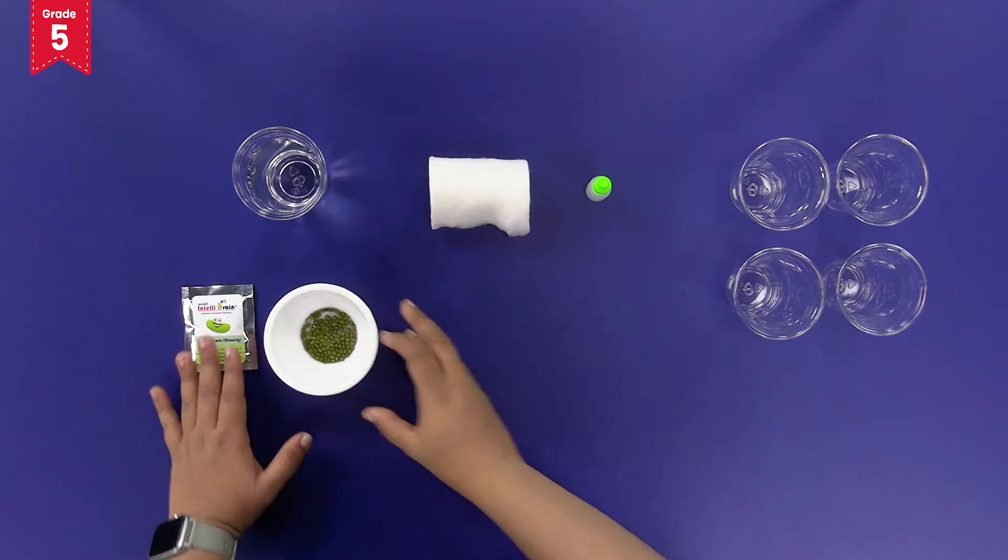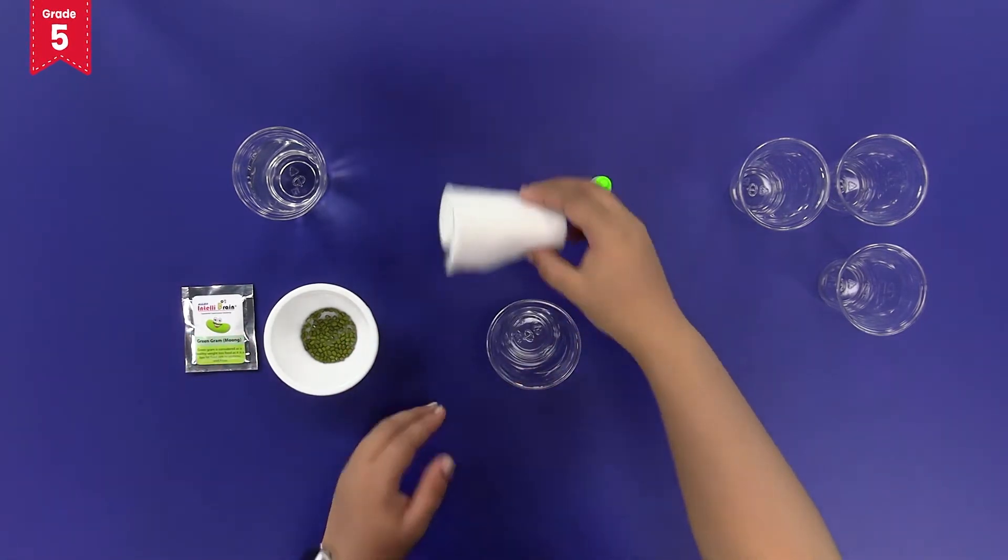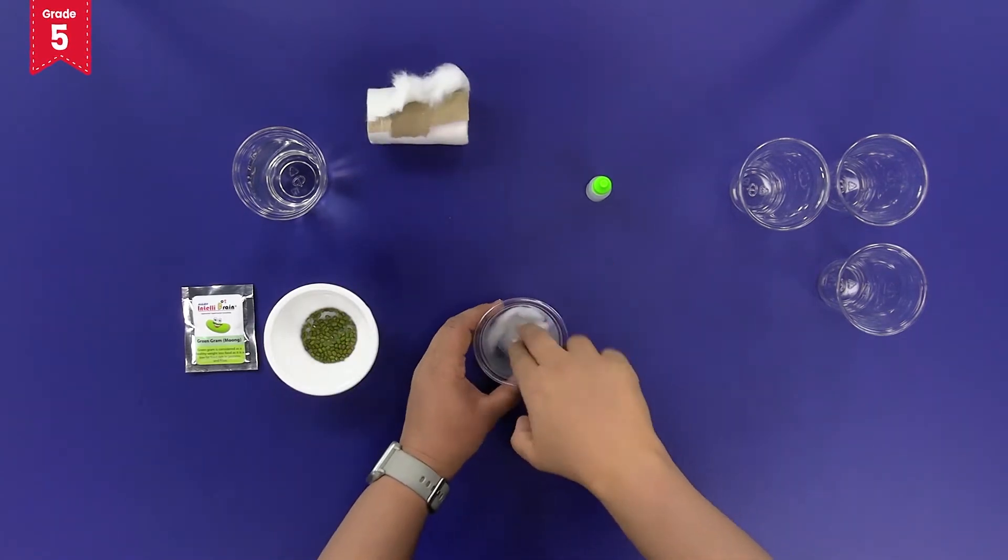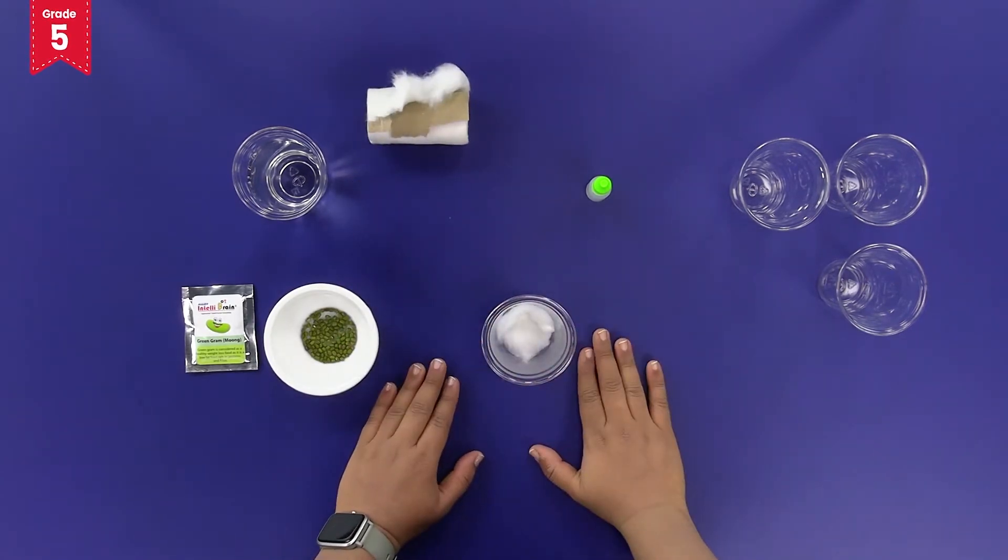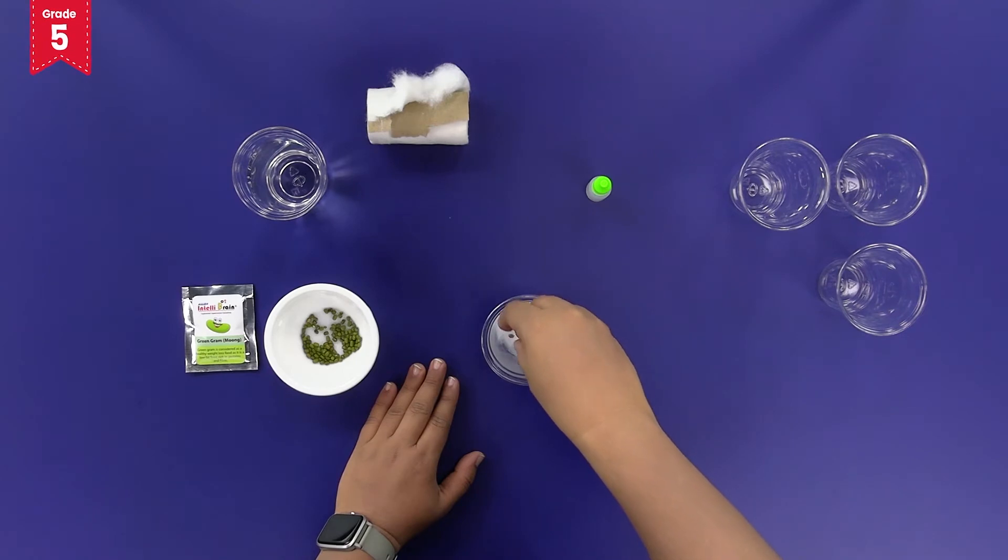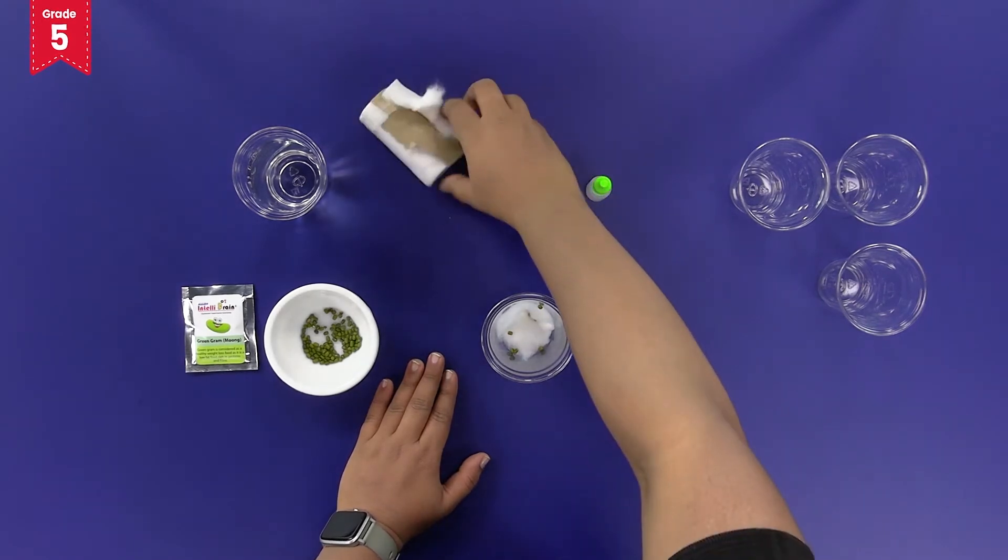Now, take a glass and add some cotton to it. Place five to six green gram seeds on the cotton. Cover these seeds with some more cotton.